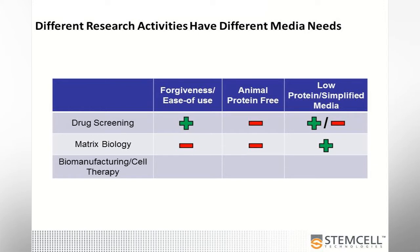If you're interested in studying matrix biology, you're probably not doing long-term passaging, so forgiveness and ease of use is probably not a concern. Animal protein free, if you're just doing basic biology, may not be as important, but having a simplified or low protein media could be very important when you're trying to isolate specific interactions between cells and their matrix.